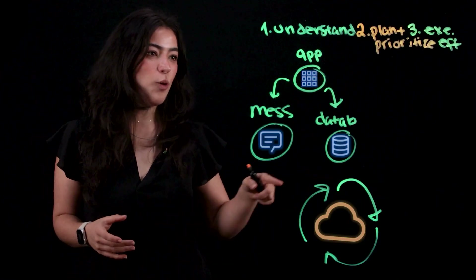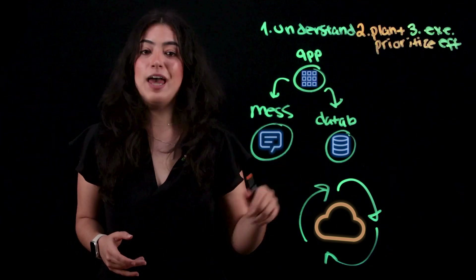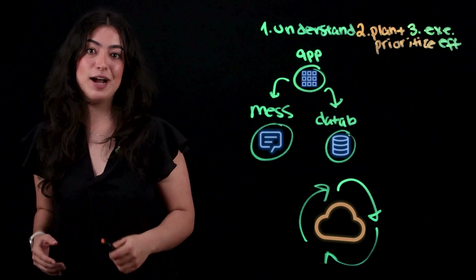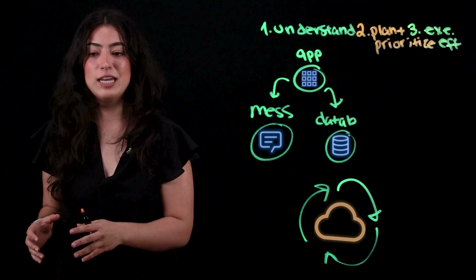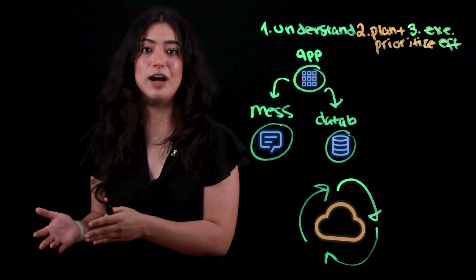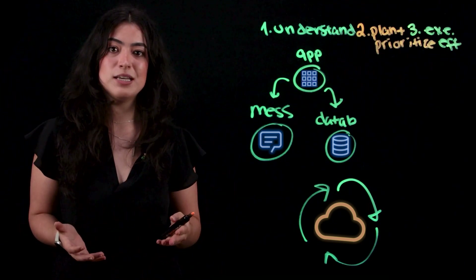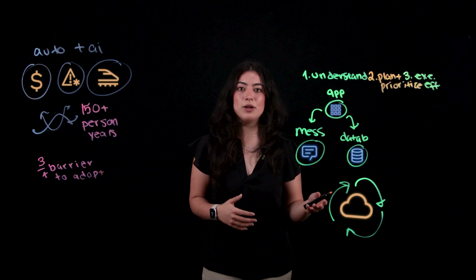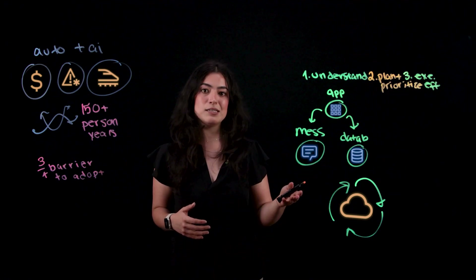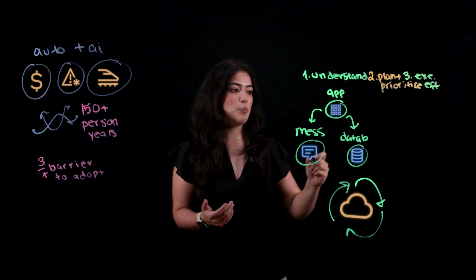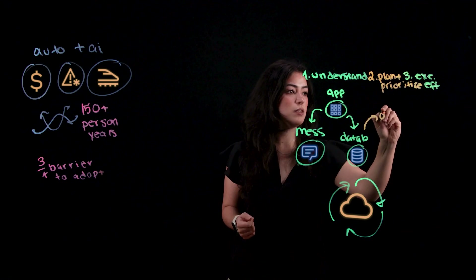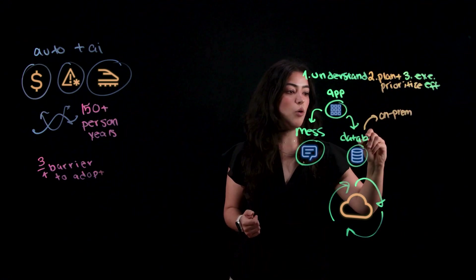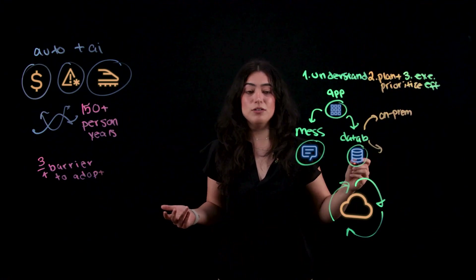Now we need to decide what to modernize. For that, we need to plan and prioritize our findings. We need a thorough understanding of the current environment, the destination environment, and the code. When moving to the cloud, it's important to consider the dependencies — for example, do we keep our database on-prem, or should we move it to the cloud?